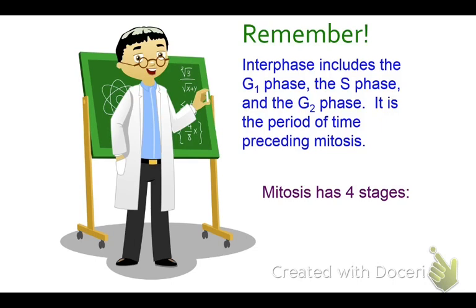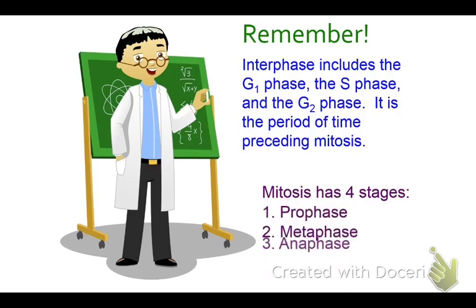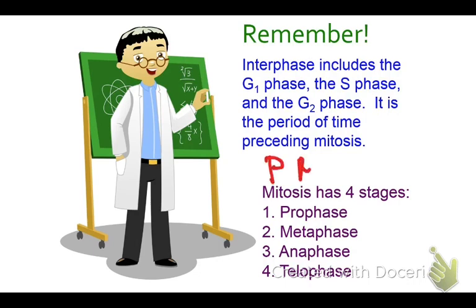Mitosis has four main stages: prophase, metaphase, anaphase, and telophase — or PMAT, which is just a way to help you remember the four steps. Prophase, metaphase, anaphase, telophase.